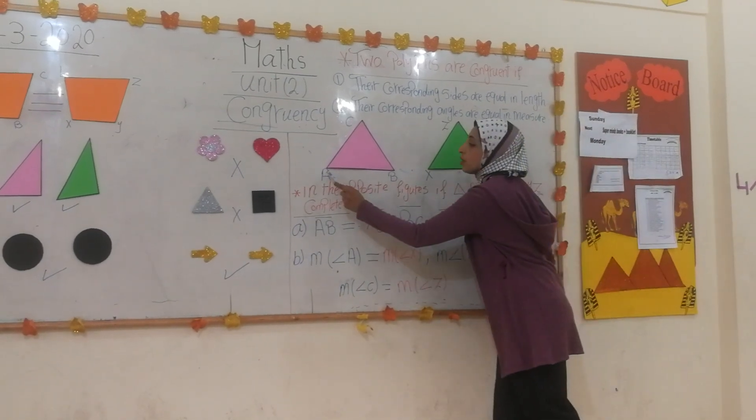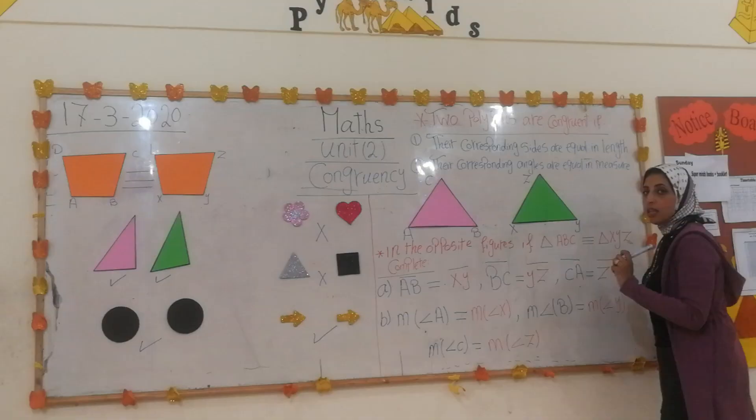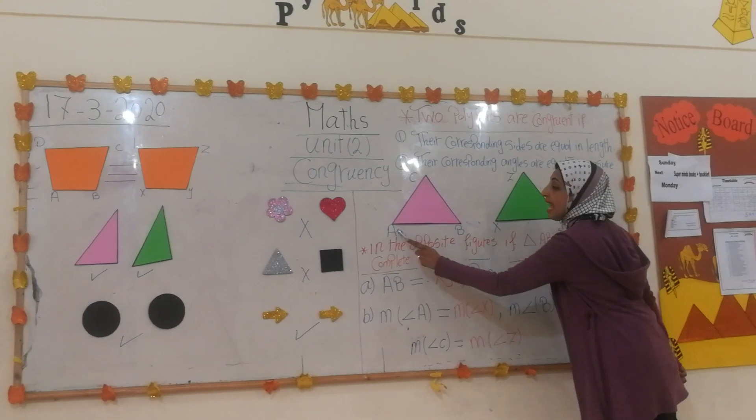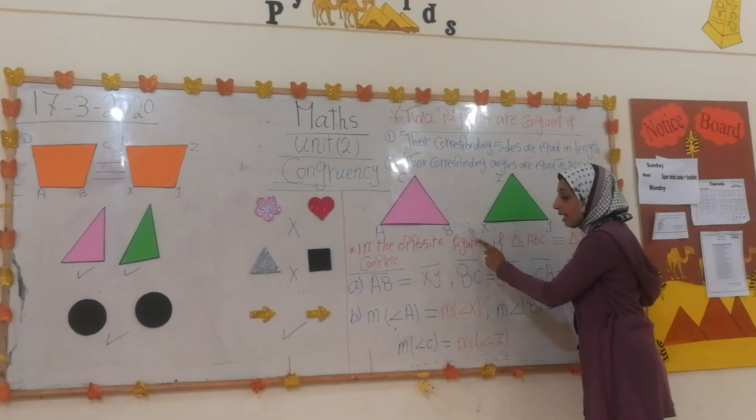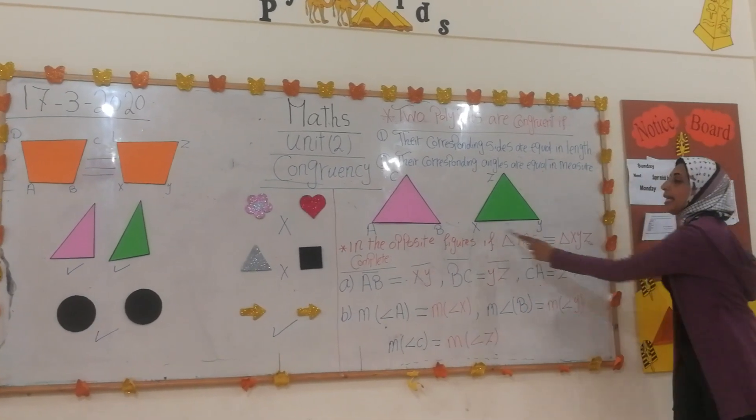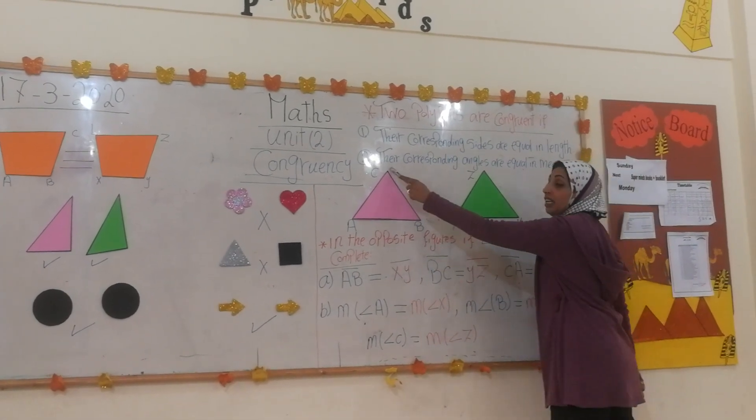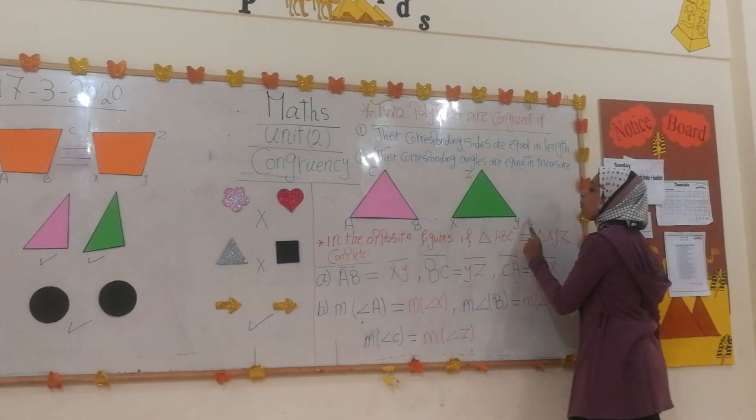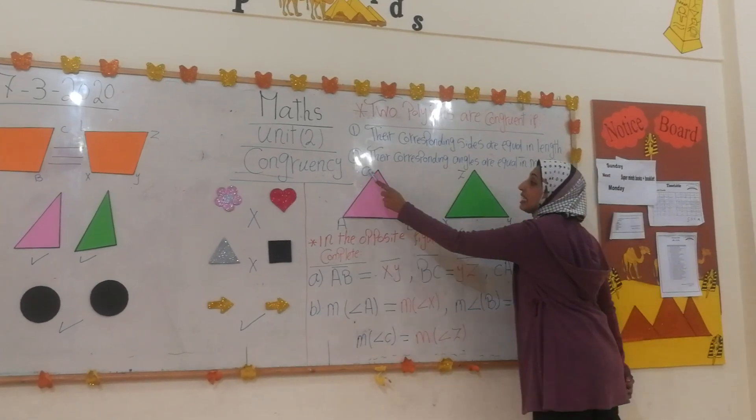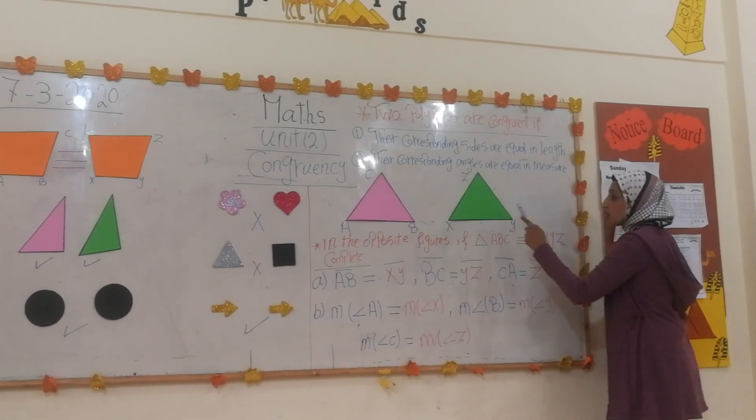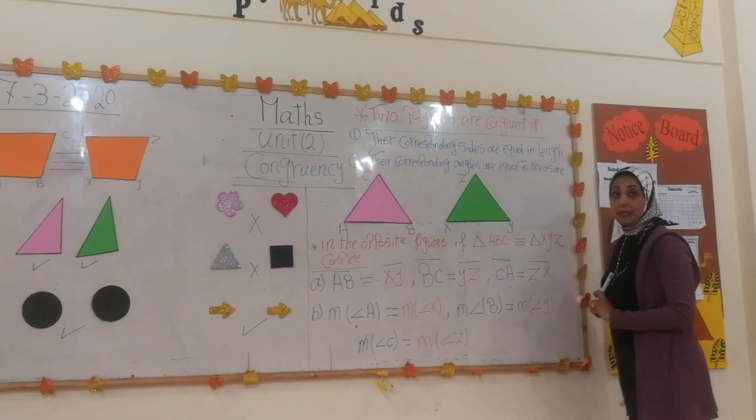Measure of the length AB equals what? AB equals XY. And the length BC equals what length? Equals YZ. And the length of CA equals the length of ZX.